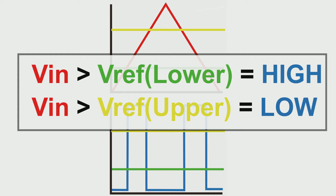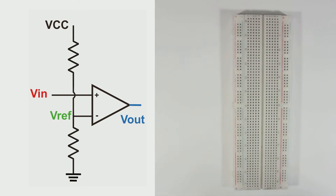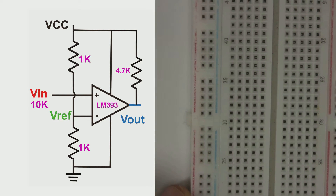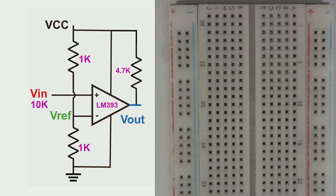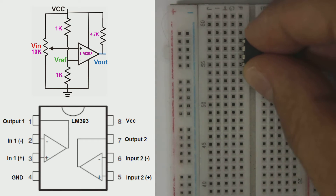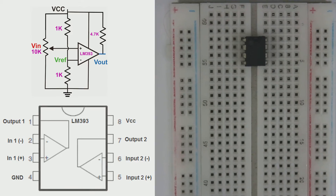Now let's get our hands dirty by starting the experiment. In the real world, we need to power up the comparator IC and give the IC output a pull-up resistor. So the schematic becomes like this. In this example I will use an LM393 comparator IC — you can use another comparator IC too, just read the datasheet. This is the LM393 comparator IC pinout. By looking at this pinout and schematic we can now build the circuit on a breadboard.